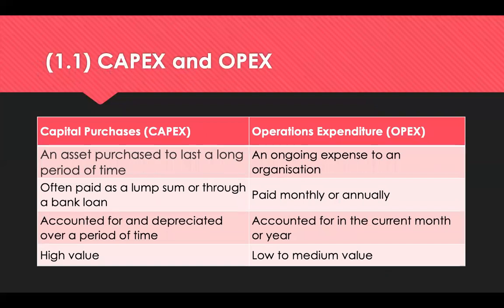We're now going to look at the difference between CAPEX and OPEX. CAPEX are capital purchases — purchases of an asset for your organisation such as machinery, buildings or land. They're procured to help a business develop, make money and keep up with market trends. The value of capital purchases reduces over time, reflected in the organisational budget. The amount by which the asset reduces is known as depreciation — either fully or partially depreciated. The procurement professional needs to work with the finance department to determine how quickly the asset may depreciate.